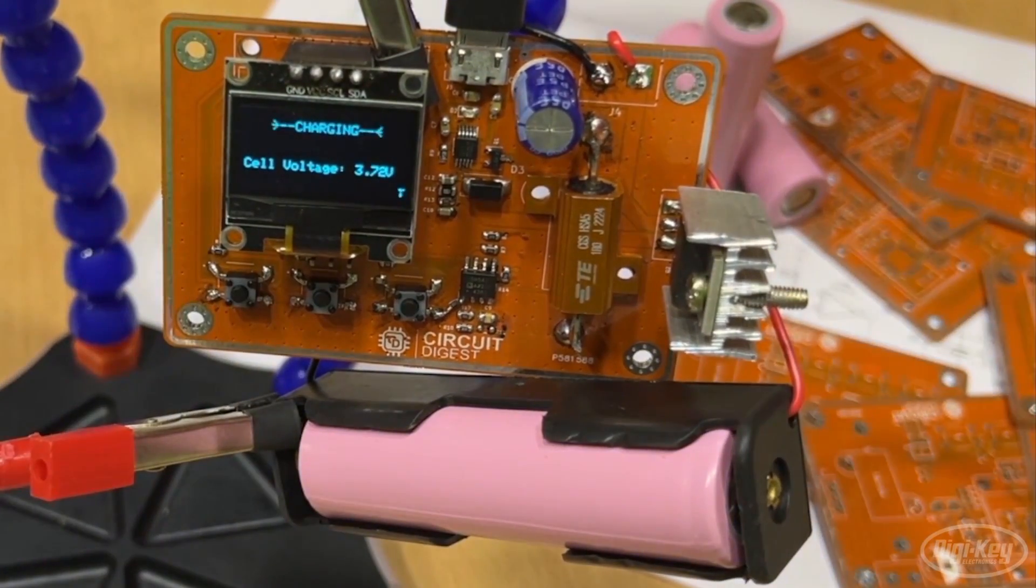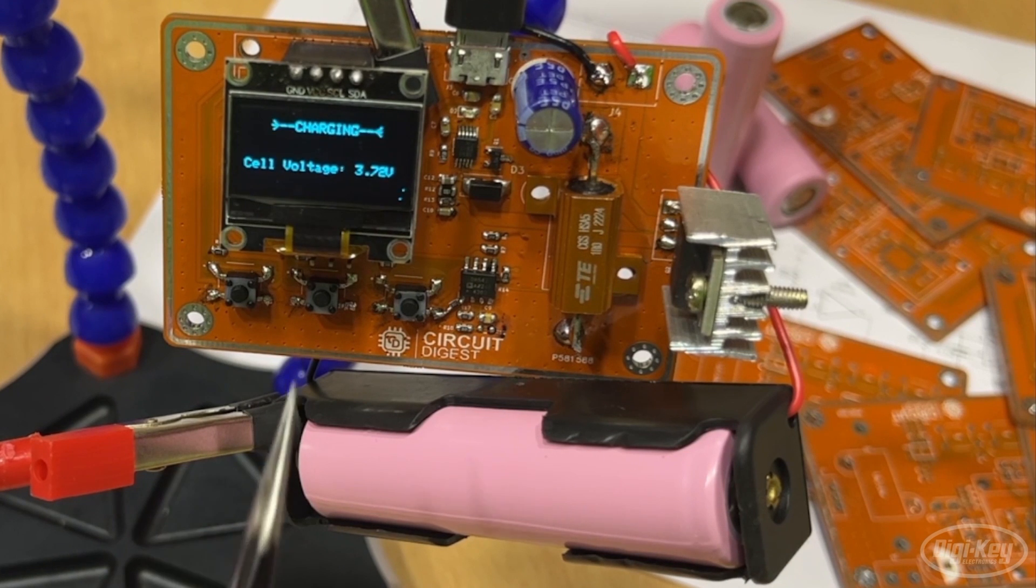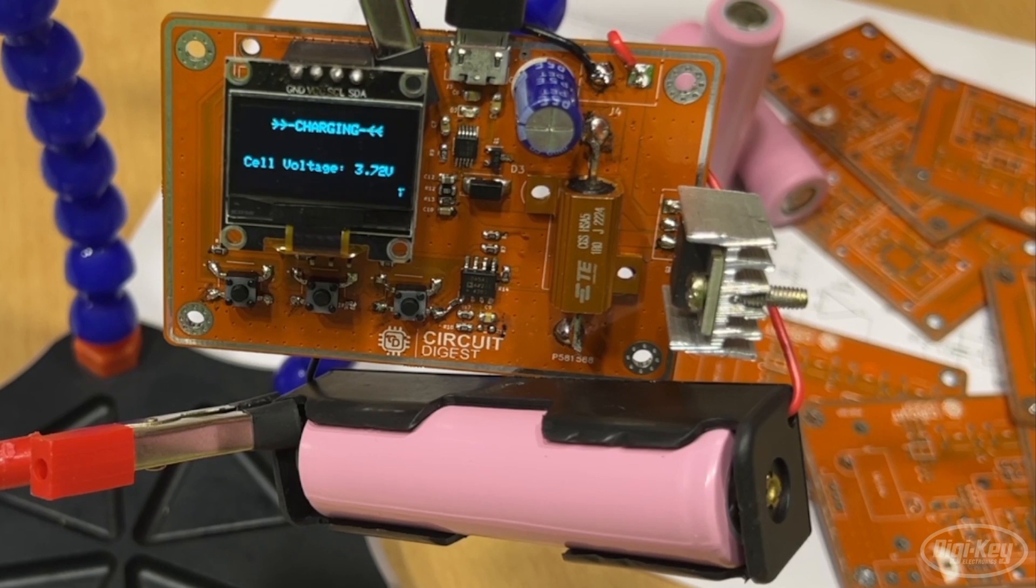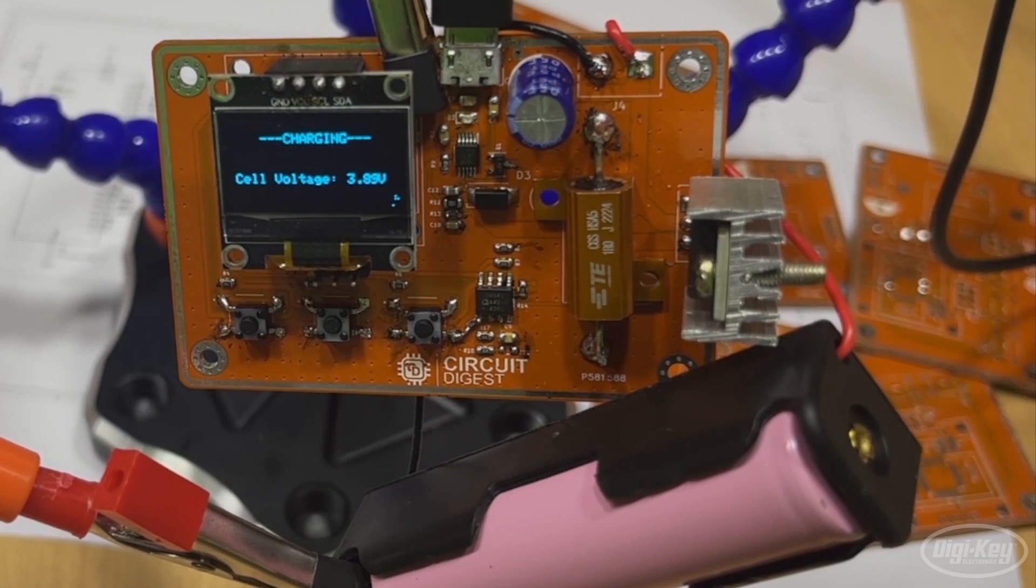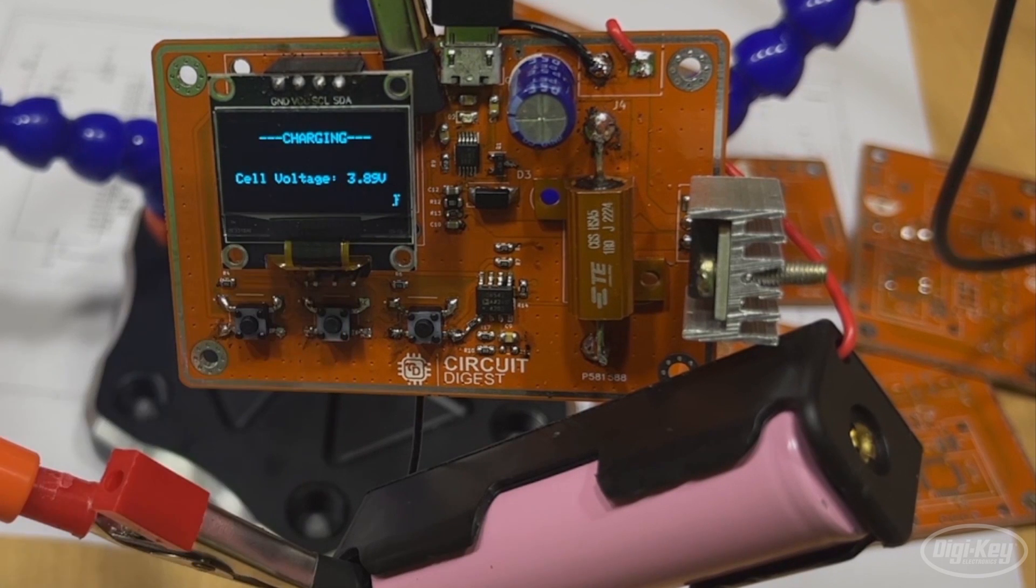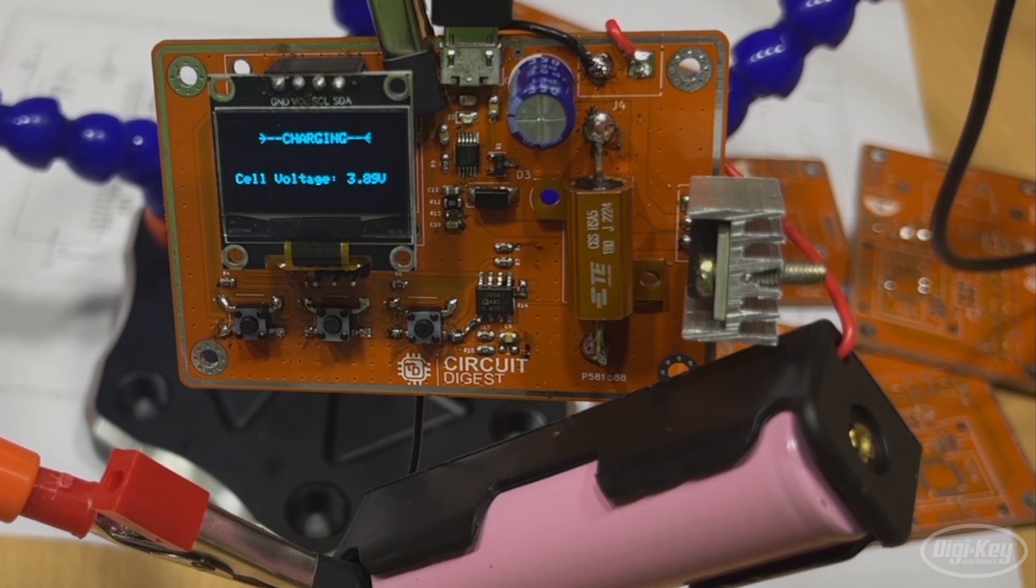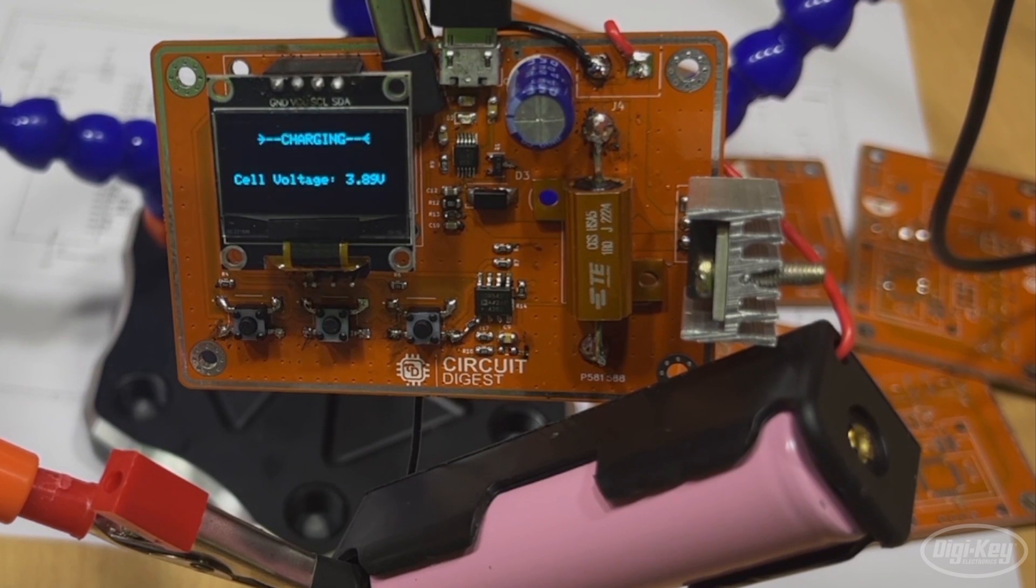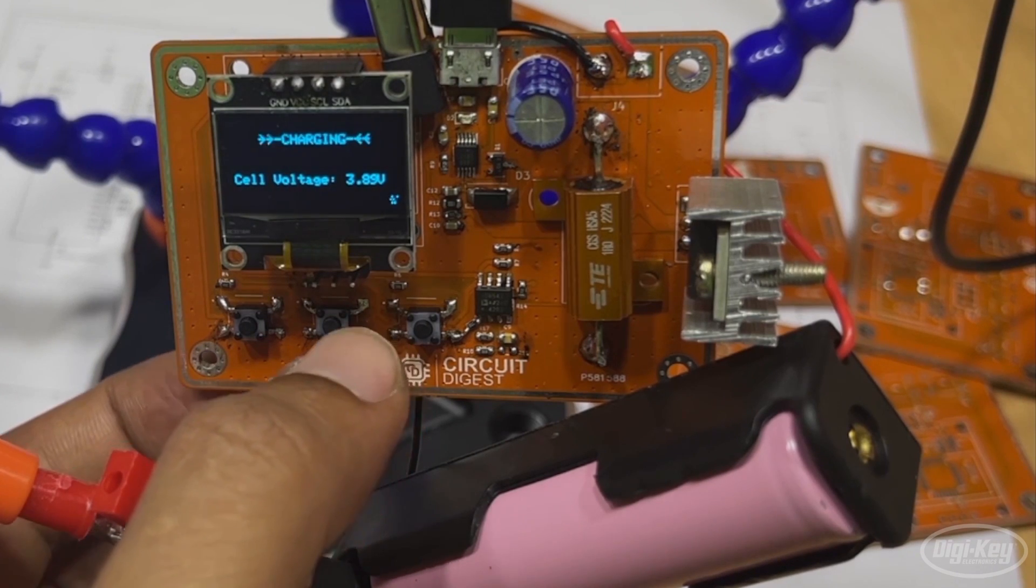As you can see the charging process has already started. You can see this animation and with time you can slowly see the voltage of the cell increasing. Let us leave it to it, let's come back after some time and see if the cell is fully charged. Now it has been some time and as you can see the cell has slightly charged to around 3.9 volts. Ideally it should charge up to 4.2 volts and it should cut off on its own, but for the sake of this video let's proceed with discharging the cell as well.